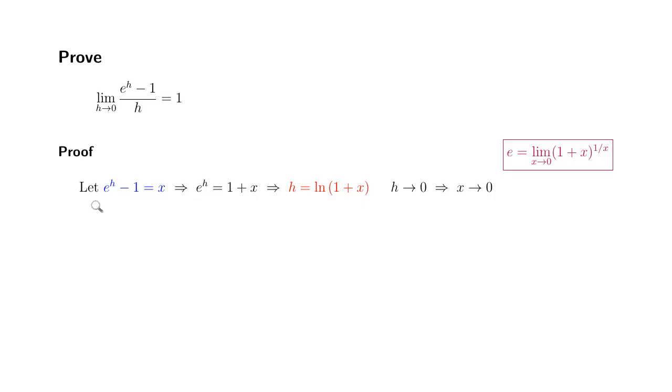So as h approaches 0, e to the h approaches 1. 1 minus 1 is 0. So x is also approaching 0.